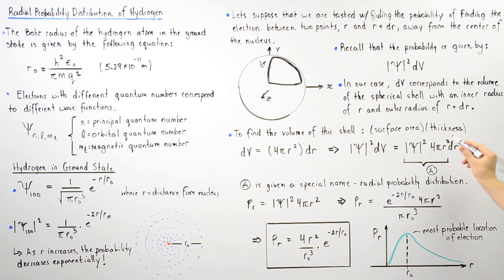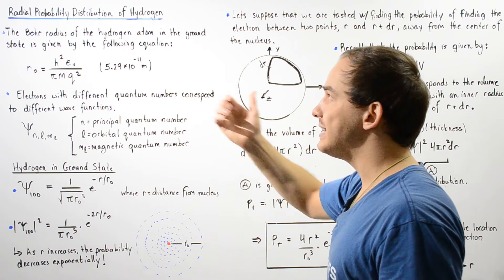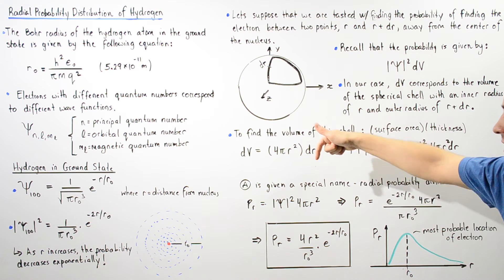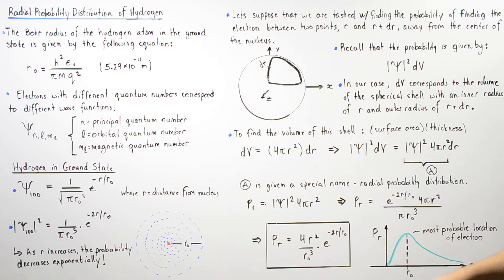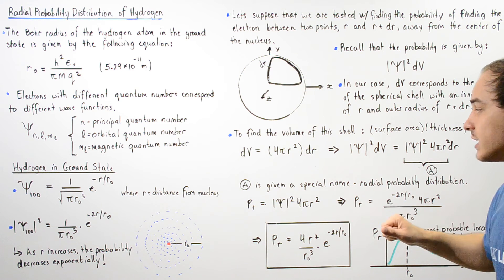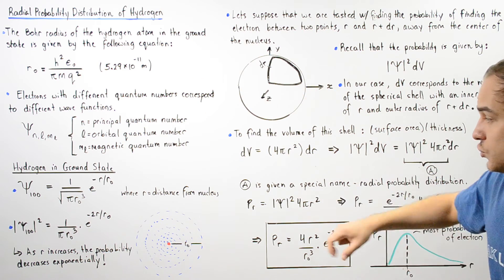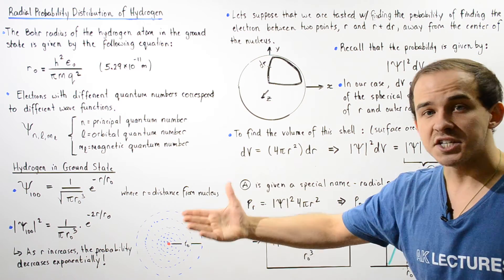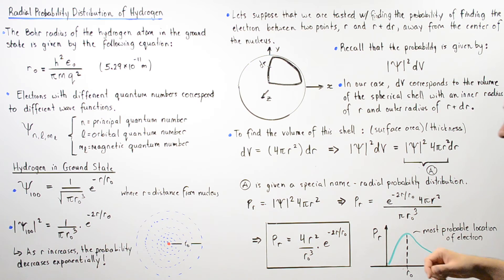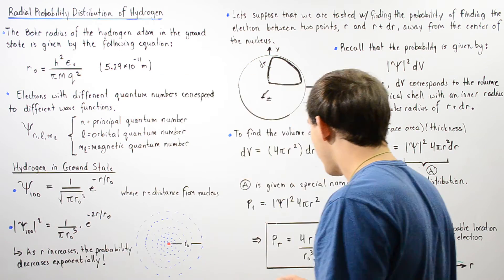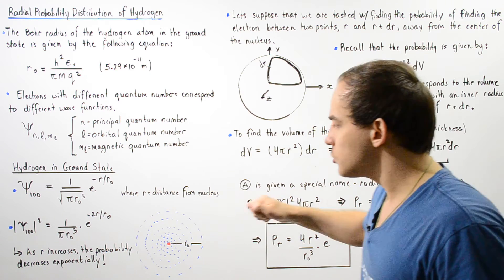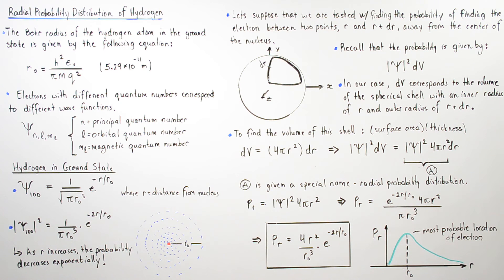The term — the square of the absolute value of psi multiplied by 4 pi r squared — has a special meaning and is given the name the radial probability distribution. The radial probability distribution of the electron in the ground state of the hydrogen atom is given by taking the square of the absolute value of the wave function, multiplying by 4 pi and by r squared. The radial probability distribution is denoted P-r, where r stands for radial. Substituting our expression for psi squared, the pi's cancel and we get a simplified equation.